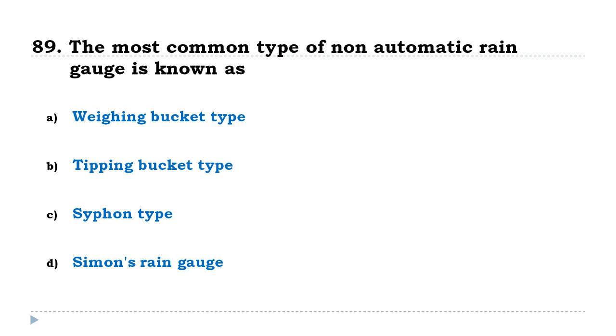The most common type of non-automatic rain gauge is known as Simon's rain gauge.